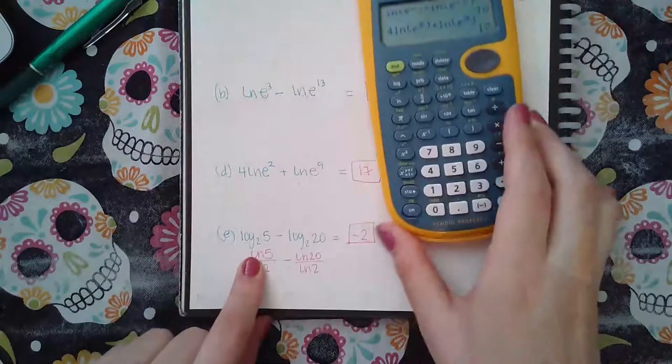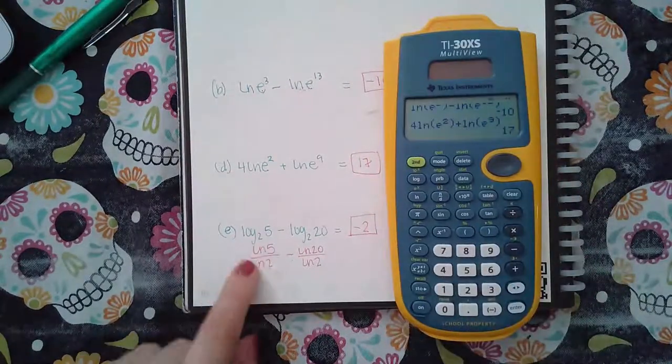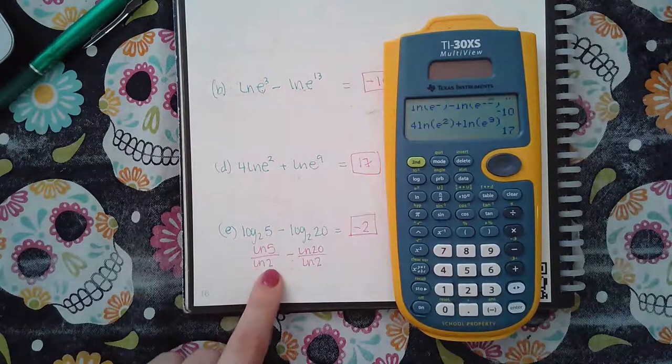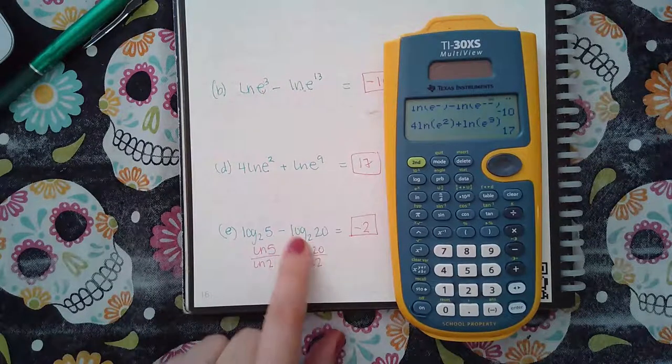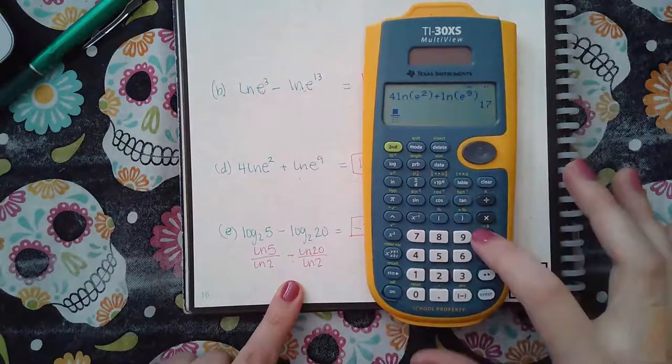The last one is a log base two. I don't have that in my calculator, so I had to change it. I did ln of the argument over ln of the base. Same for this term - ln of the argument over ln of the base. I literally just typed that in.